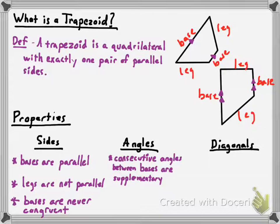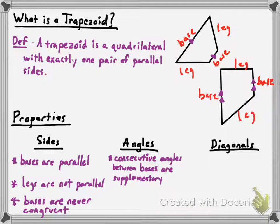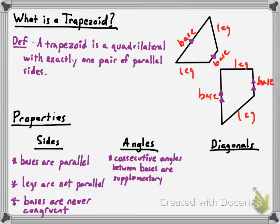If I'm looking at this first trapezoid, these two consecutive angles are between the bases — they're supplementary to one another. These other two consecutive angles are between the bases — they're supplementary to one another. If you look at consecutive angles between two legs, however, they're not supplementary. So it's not like all pairs of consecutive angles are supplementary as they would be in a parallelogram; just the ones between the bases are.